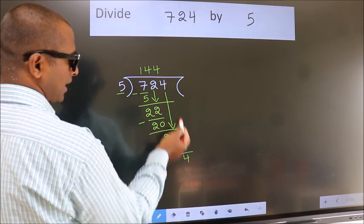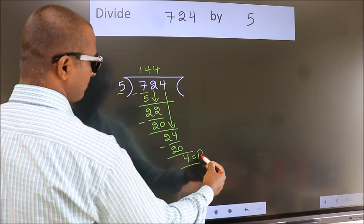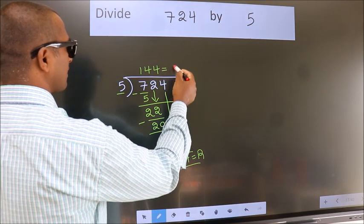No more numbers to bring it down. So, we stop here. This is our remainder. This is our quotient.